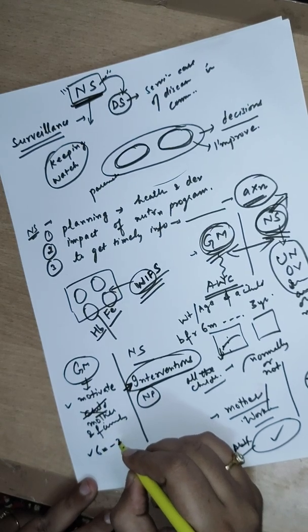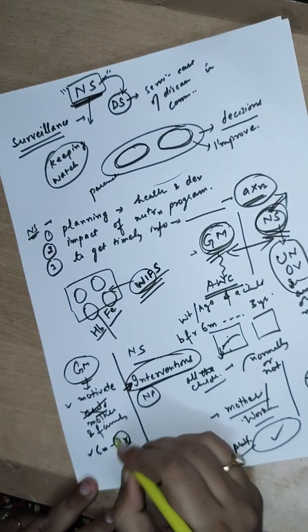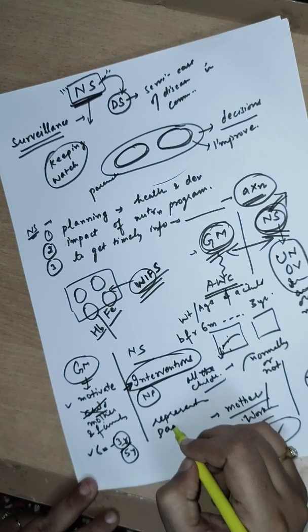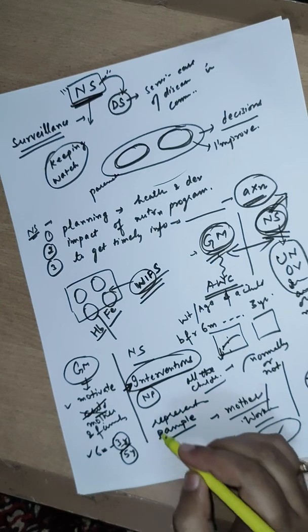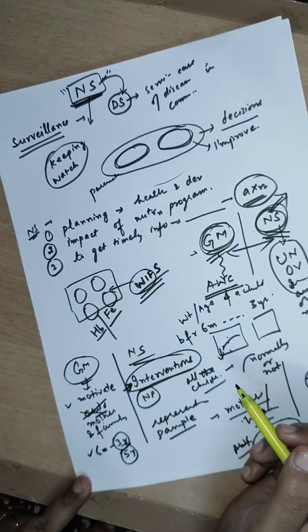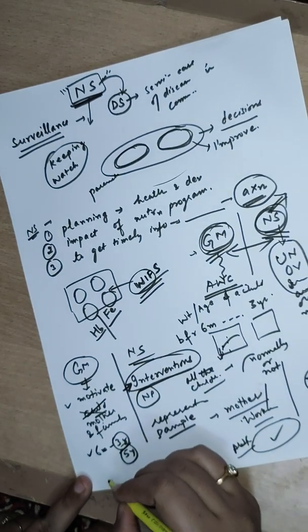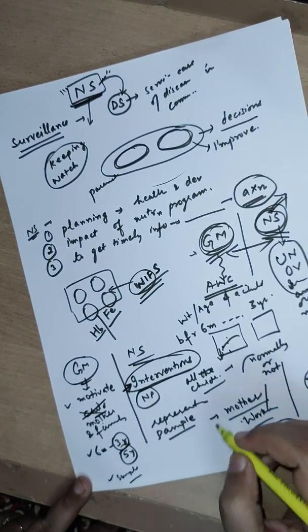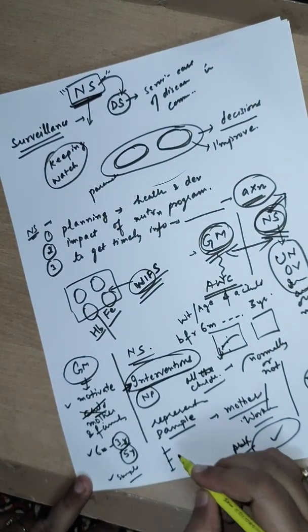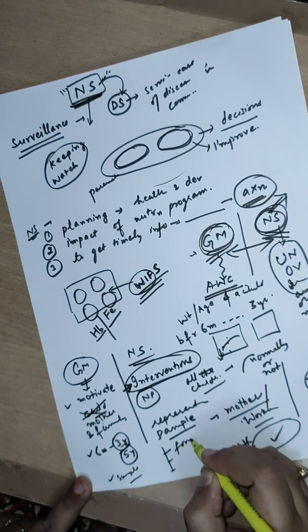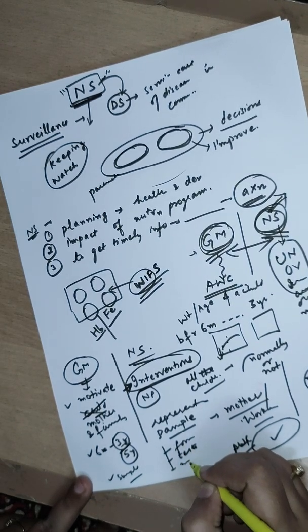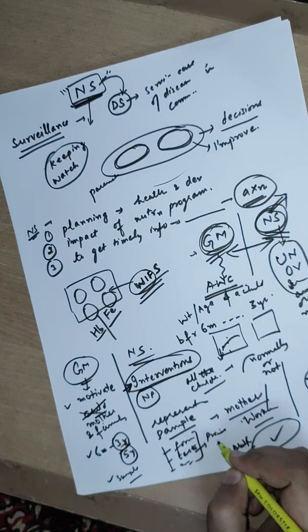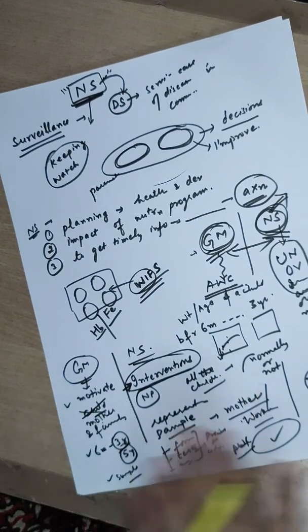Growth monitoring is done for children from six months to three years, or up to five years depending on the growth chart used. Nutritional surveillance is done for any representative sample chosen from any age group where we want to check nutritional status. Growth monitoring is a simple and not-so-tedious process, while nutritional surveillance requires a lot of effort — we need to plan a format of surveillance, plan tests, and other measures to conduct it. It is a precise and tedious process in comparison to growth monitoring.